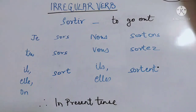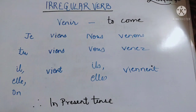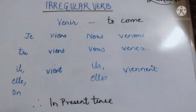'Venir' means 'to come'. The stem is V-E-N. Conjugation: 'je viens', 'tu viens', 'il vient', 'nous venons', 'vous venez', 'ils viennent' — meaning I come, you come, he comes, we come, you come, they come. Spellings: 'je' and 'tu' — V-I-E-N-S. 'Il' — V-I-E-N-T. 'Nous' — V-E-N-O-N-S. 'Vous' — V-E-N-E-Z. 'Ils' — V-I-E-N-N-E-N-T.